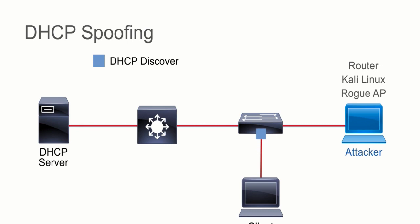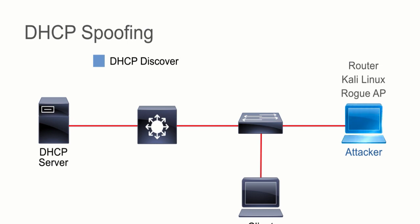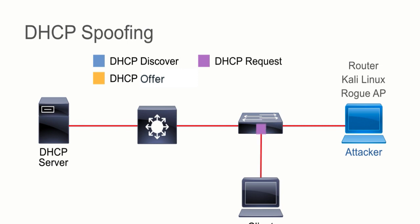Before that message, which is a broadcast, could even make it to the DHCP server, this rogue sees it. Because the rules on a switch are, if it's a broadcast, flood it out of every port except the one it came in on. So what happens is this rogue DHCP server replies back, and the client takes that address, sends a DHCP request, and the DHCP ACK comes back.